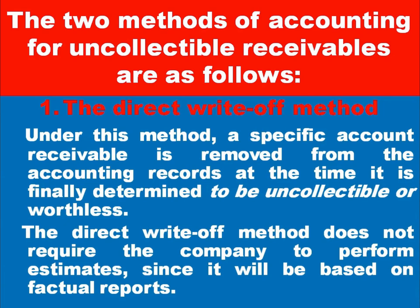In accounting, there are two methods of accounting for uncollectable receivables. The first is the direct write-off method. This is a simple method. Under this method, a specific account receivable is removed from the accounting records at the time it is finally determined to be uncollectable or worthless. The direct write-off method does not require the company to perform estimates — it is based on factual reports.